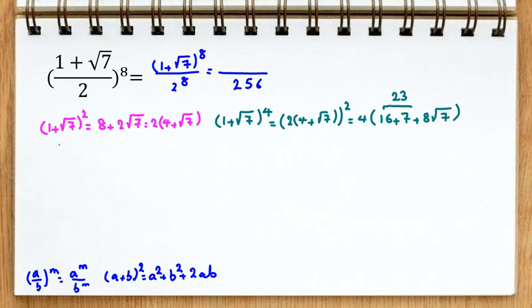In the next step, we calculate 1 plus root 7 to the power of 8. It is this part: 4 times 23 plus 8 root 7, squared.